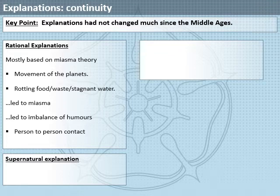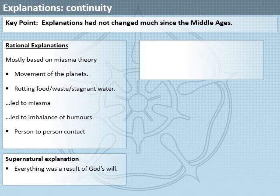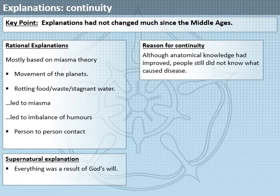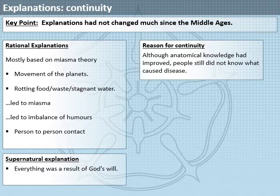But like in the Middle Ages, people also turned to the supernatural. They believed everything was the result of God's will. The reason for continuity here is that although the Renaissance had seen anatomical developments, people still did not know what really caused disease, so their explanations hadn't changed.